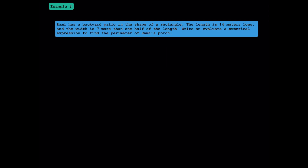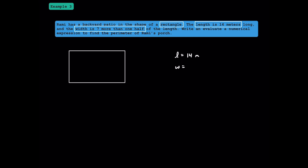Let's try example three. Pause the video to read the question, then unpause when you're ready. I'm going to start by drawing a rectangle since that's the shape of the patio. The length is 14 meters. The width is 7 more than half of the length. Since the length is 14, half of 14 is 14 over 2, and we add 7. This is the width in meters, and I've labeled them on the rectangle.